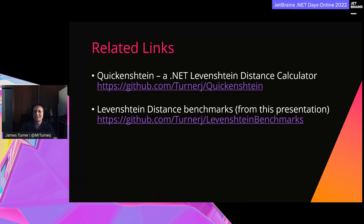Some related links: Quickenstein is my library to calculate Levenshtein distance, which includes all of these performance improvements and a couple of others, packaged as a NuGet package. Additionally, all the benchmarks and step-by-step implementations are up on GitHub if you want to check that out.